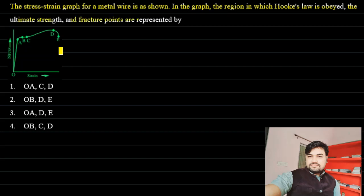So we have to indicate these points: fracture point, ultimate point, and Hooke's law point in this stress-strain graph. According to Hooke's law, stress is proportional to strain.